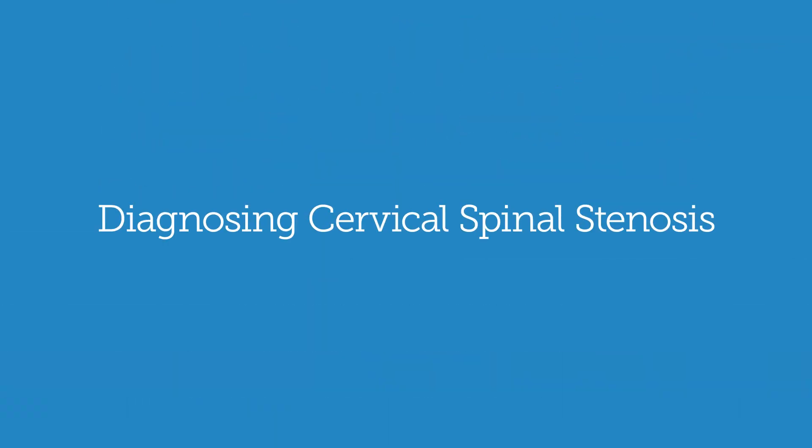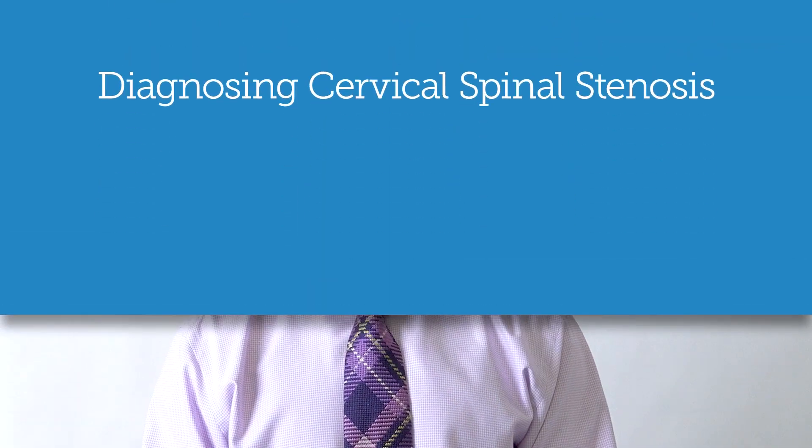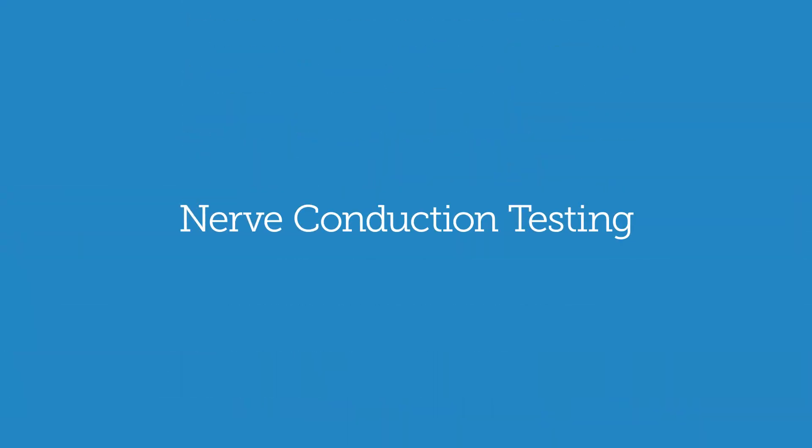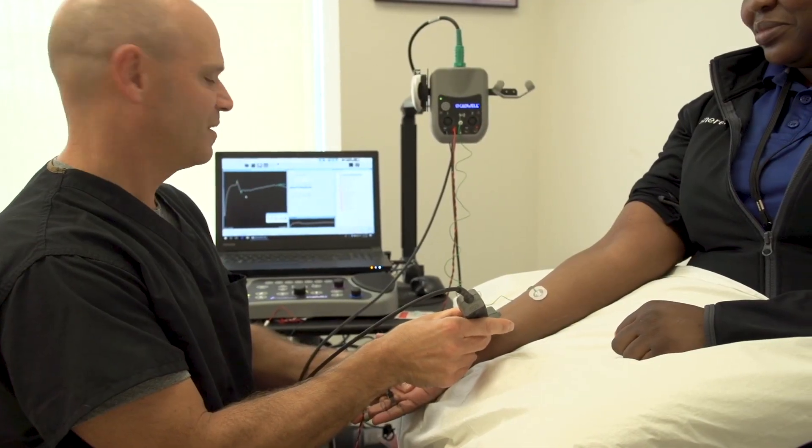The way we diagnose cervical stenosis starts with history and a good neurologic exam looking for weakness, numbness, or something called hyperreflexia. Imaging is also helpful. An MRI shows the shape of the spinal canal and shows if there is any pinching of the spinal cord. It can also show inflammation inside the spinal cord, which would be a very late finding and would typically lead to surgery. An EMG or nerve conduction test can be very helpful for a patient with numbness or weakness in the upper extremities.